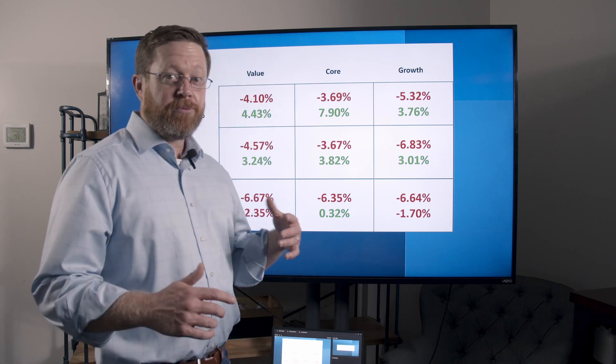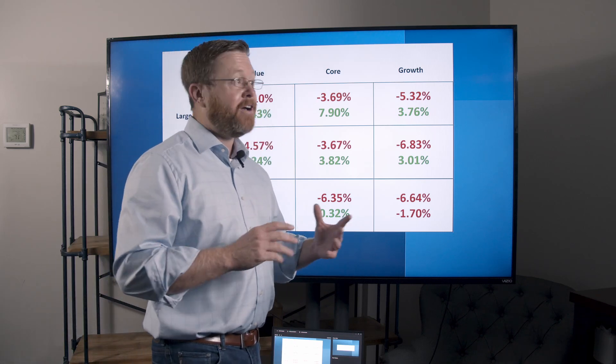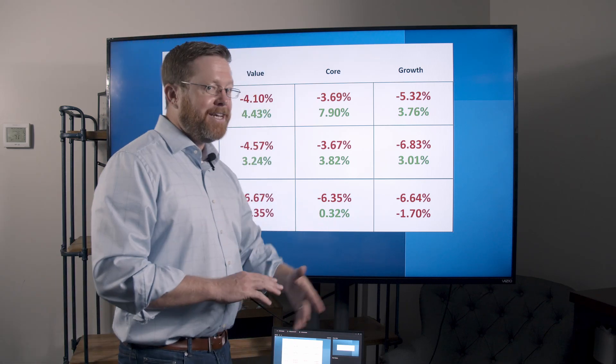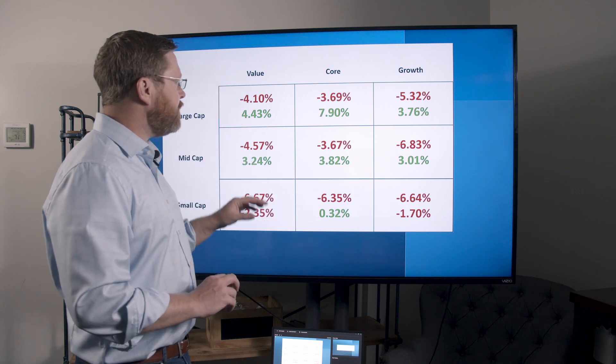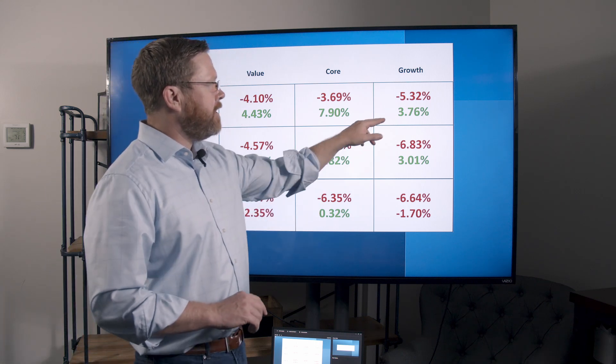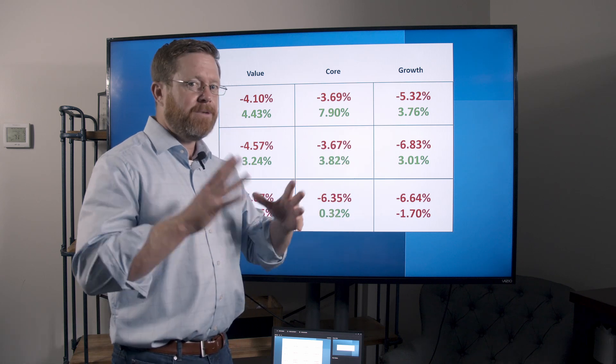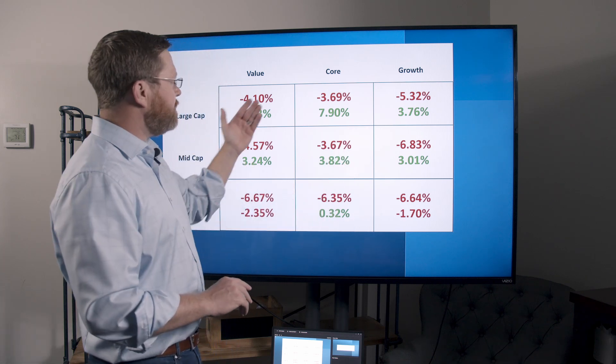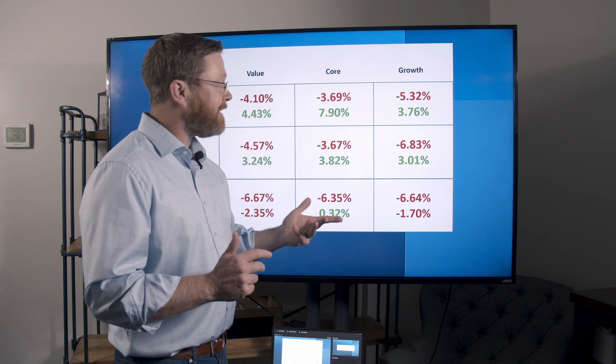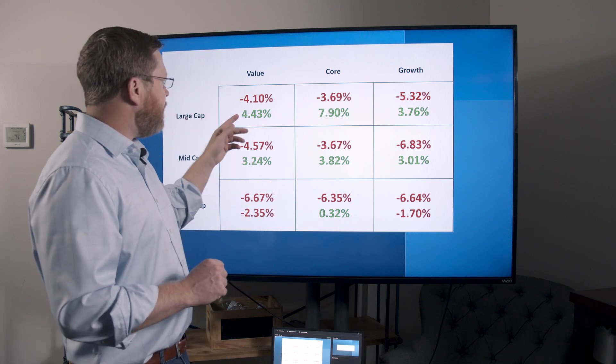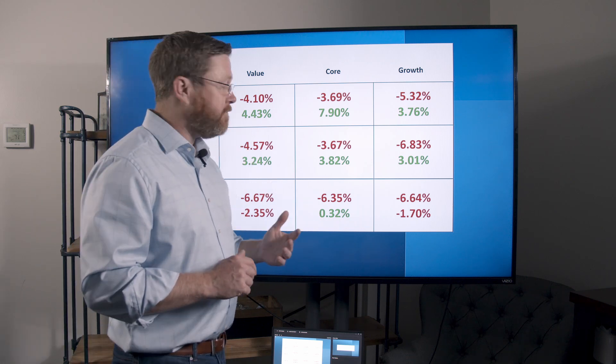So let's talk about those April numbers because they were really rough. You can see every single equity was down pretty substantially for the month, and look what it did to the year-to-date. It had large growth at 3.7% for the year after they had been just crushing it. Core is by far the best at 8. It had 4.4 on the value after it had lost roughly half of what it was.